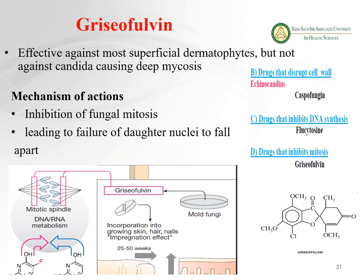Griseofulvin is the drug that inhibits mitosis within fungal cells. It is effective against superficial dermatophytes but not against Candida or deep mycoses. Its mechanism involves inhibiting fungal mitosis, leading to failure of daughter nuclei to separate.